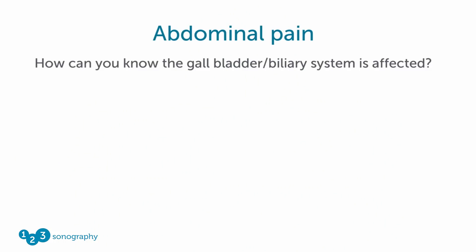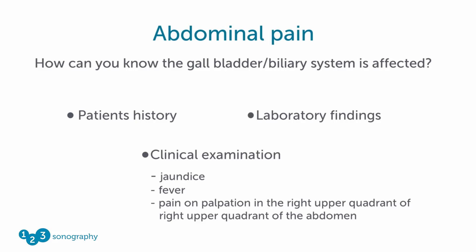But how can you know that the gallbladder system is affected? Of course, as every physician does, you have to take the patient's history. Then you have to check the laboratory findings. You have to do a clinical examination to see if there is any jaundice, fever, pain — especially pain on palpation in the right upper quadrant of the abdomen.